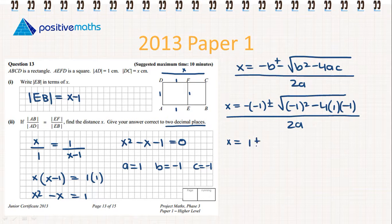x equals 1 plus or minus the square root of 1 plus 4, and that's all over 2.